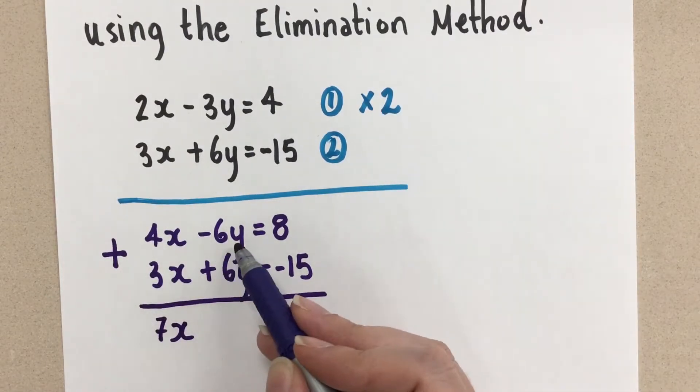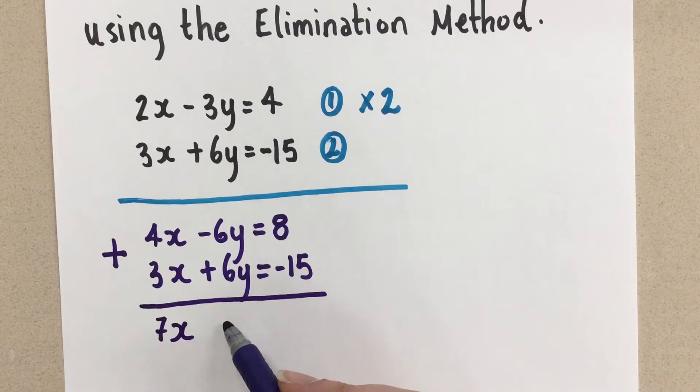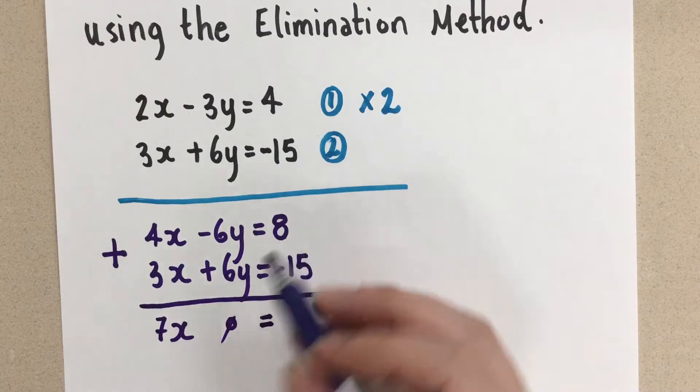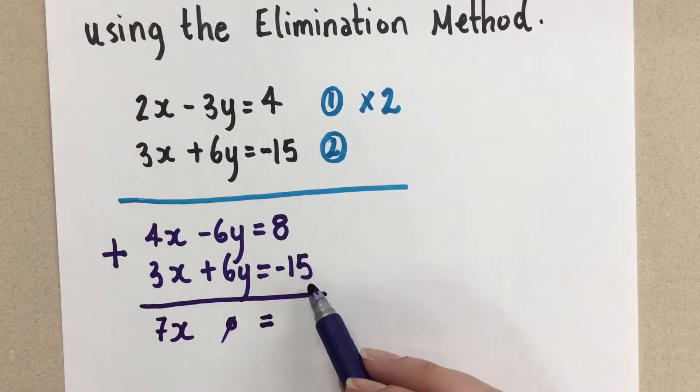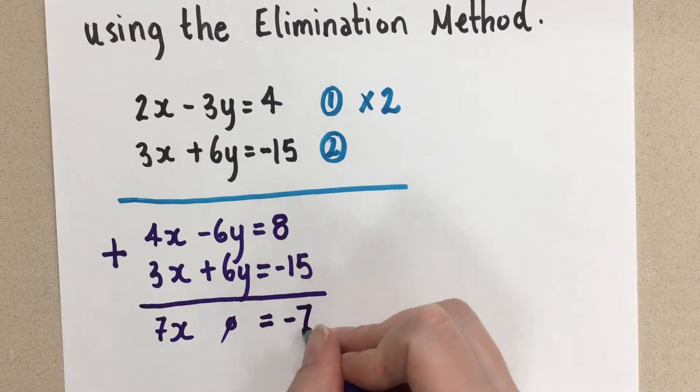And then negative 6y plus 6y gives us 0. So that's good. We get nothing here. And then on the other side,